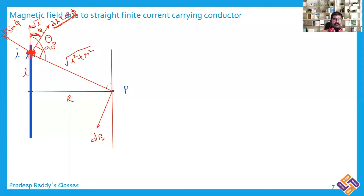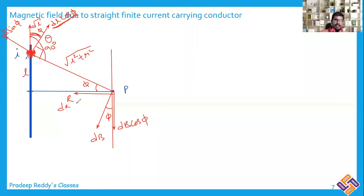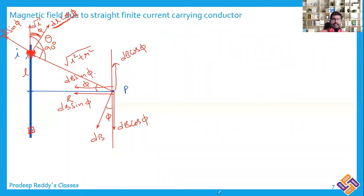This angle, and these angles are all identical, each considered as φ. I can resolve dB into two components: one component as dB·cosφ and another as dB·sinφ. Because of one small element, you get one dB·cosφ and one dB·sinφ. The components dB·cosφ from symmetric elements cancel, and overall I can write the net magnetic field as the integration of dB·sinφ.